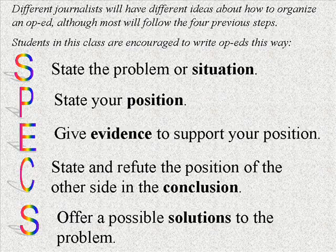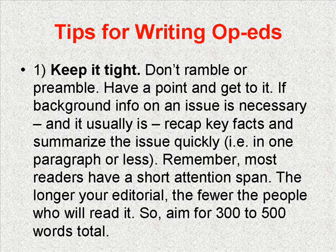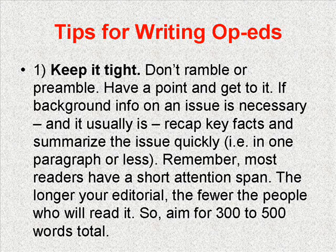Here are some additional tips for writing your op-ed. First, let's talk about article length. Keep it tight. Don't ramble or preamble — have a point and get to it. If background information on an issue is necessary, and it usually is, recap key facts and summarize the issue quickly — in one paragraph or less. Remember, most readers have a short attention span. The longer your editorial, the fewer people who will read it. So aim for 300 to 500 words total.